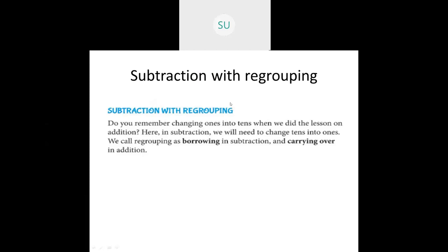Let's revise what is subtraction with regrouping first. In addition, when we add two numbers in a place and it is greater than nine, it exceeds nine. We cannot write a two digit number in one place, so we regroup it and carry it over to the next higher place in the place value chart. That is called carrying over. But in subtraction we need to change tens into ones or hundreds into tens, so we call it regrouping or borrowing.